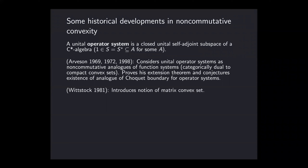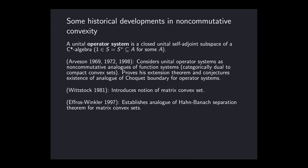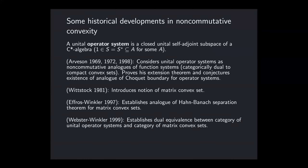In a sense, Arveson was considering the non-commutative analog of the categorical dual of a compact convex set. What Storch realized is that there's this nice geometric object on the other side of the operator system, and he introduced the notion of a matrix convex set. Subsequently — and I think it's fair to say this didn't receive much attention until Effros and Winkler really developed a systematic theory of matrix convex sets — the basic results from convexity theory were established to hold in this non-commutative context.